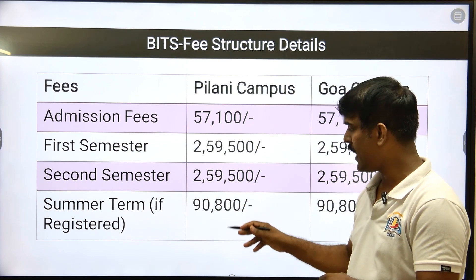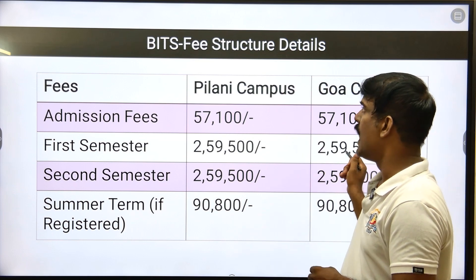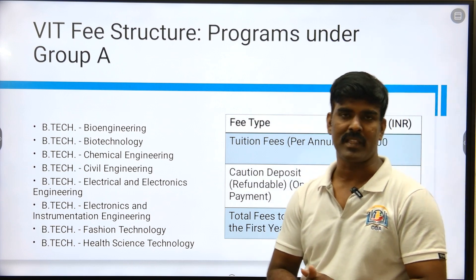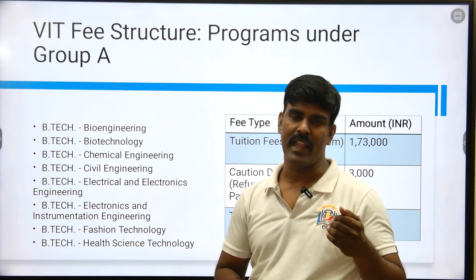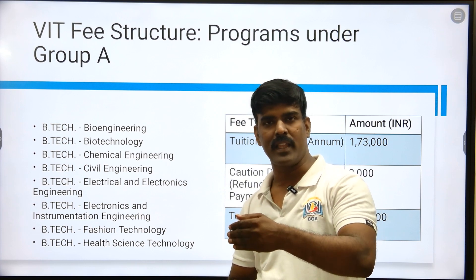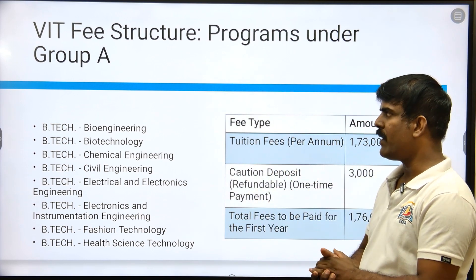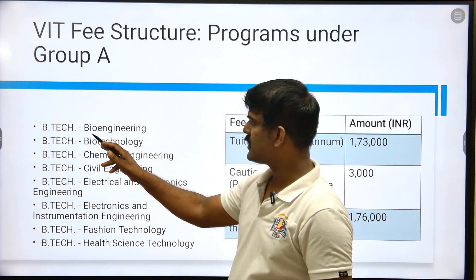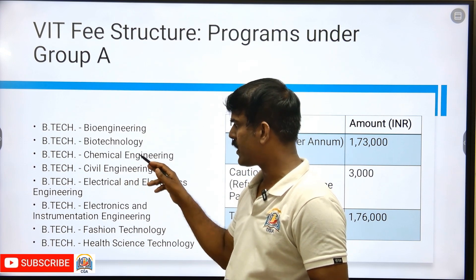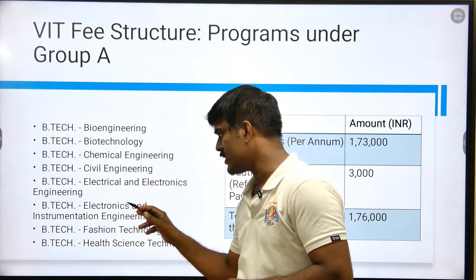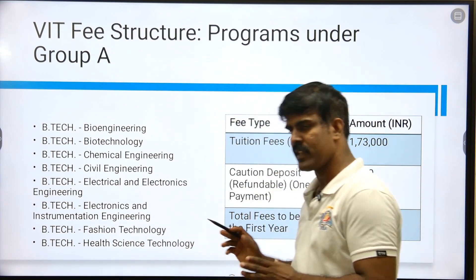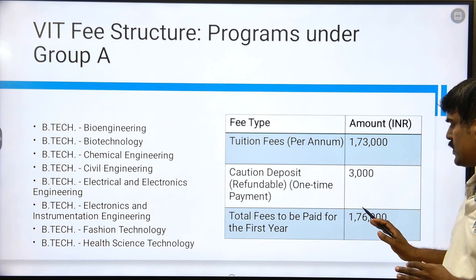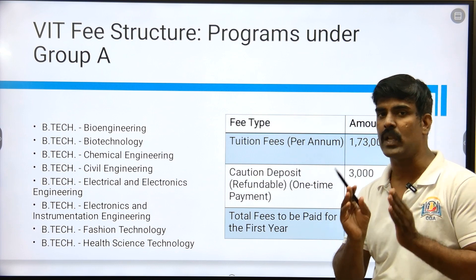The most important private institution is VIT — Vellore, Chennai, Amaravati, Bhopal, etc. They collect fees under Group A and Group B. Group A departments include: Bio Engineering, Biotechnology, Chemical Engineering, Civil Engineering, Electronics and Instrumentation, Fashion Technology, Health Science Technology. If you have the fee structure for Group A, you have 1,73,000. Caution deposit is 3,000, so around 1,76,000 fees. Hostel starts from 1.5 lakh to 2.5 lakh.